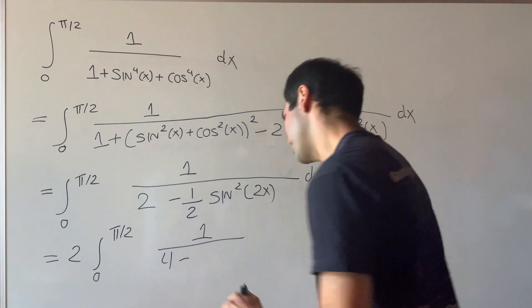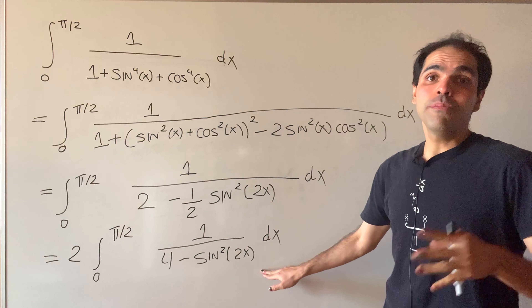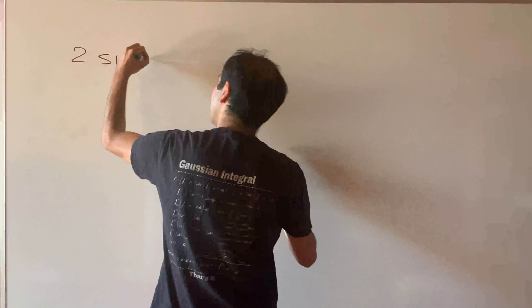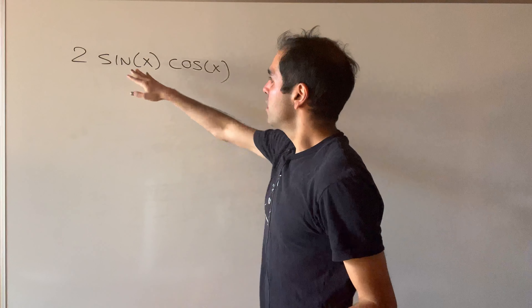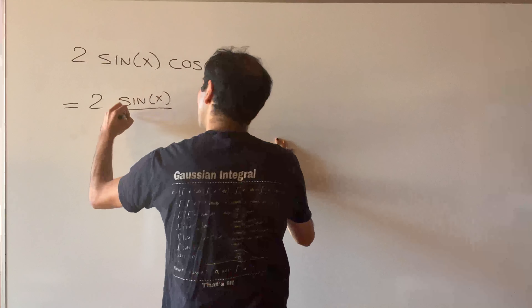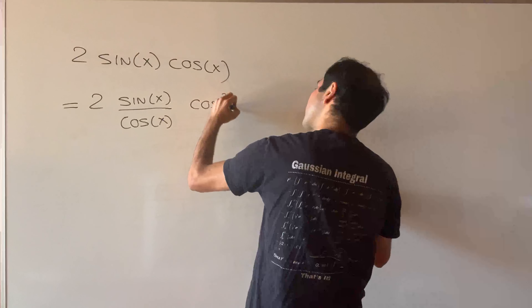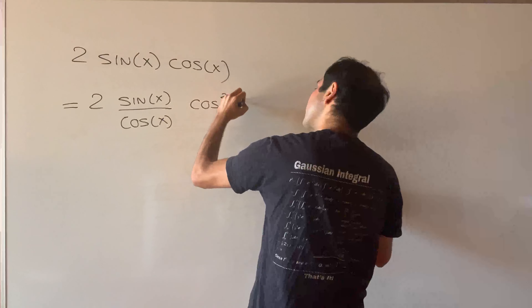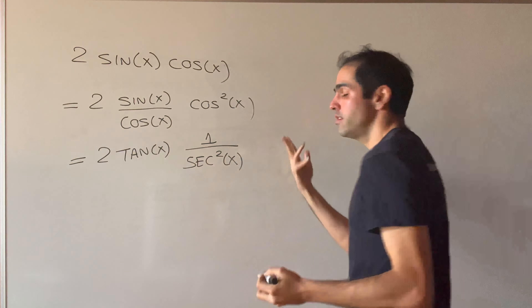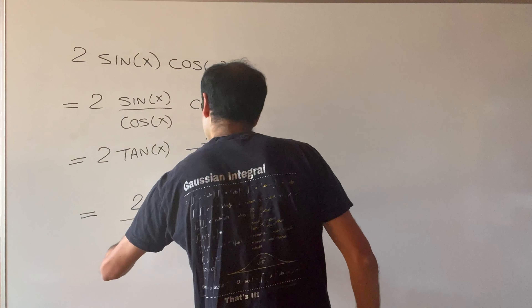The next step — you'll see why — is to rewrite this in terms of tangent, because sine of two x equals two sine x cosine x. Dividing and multiplying by cosine, this becomes two sine x over cosine x times cosine squared x. Sine over cosine is tangent, so two tangent x. And cosine squared x is one over secant squared x, and secant squared is one plus tangent squared. So in the end it becomes two tangent x over one plus tangent squared x.